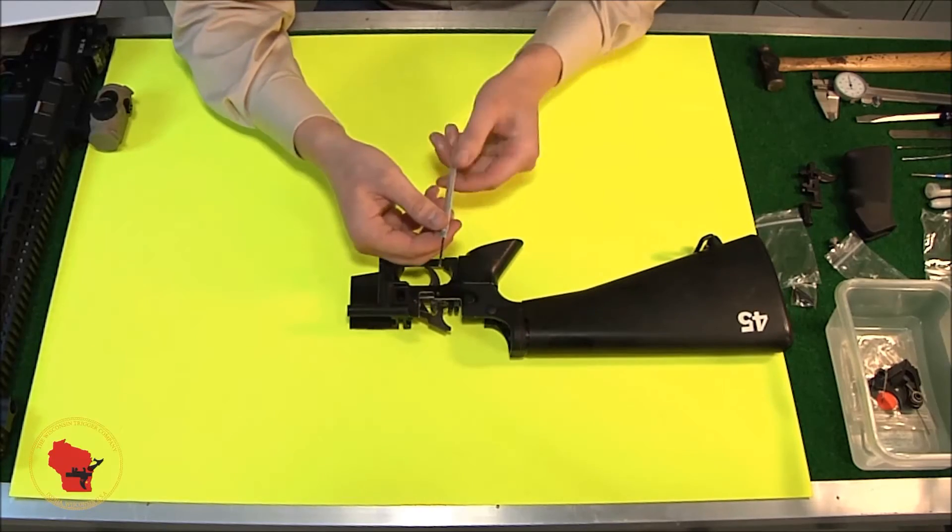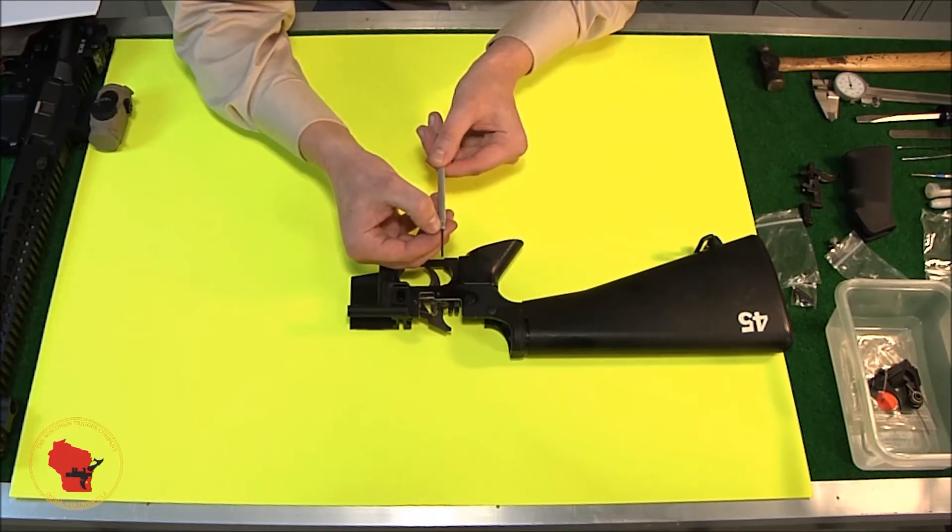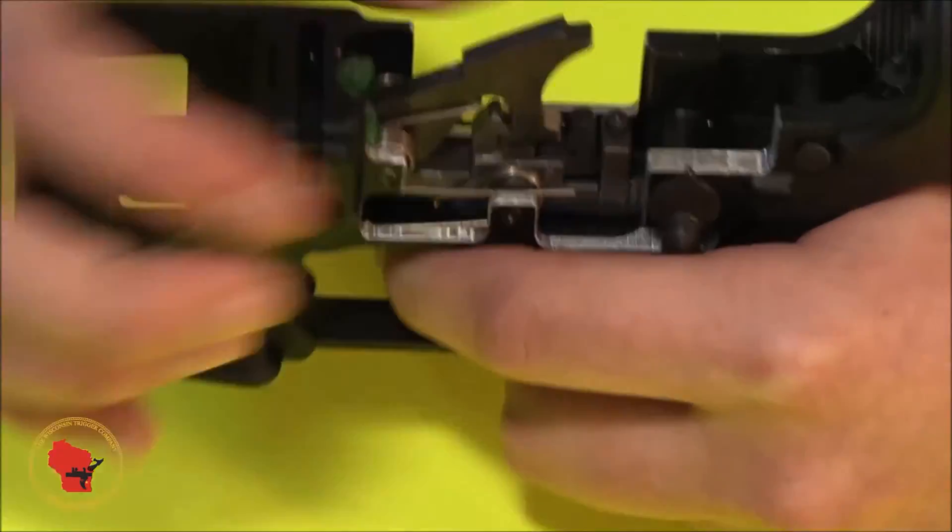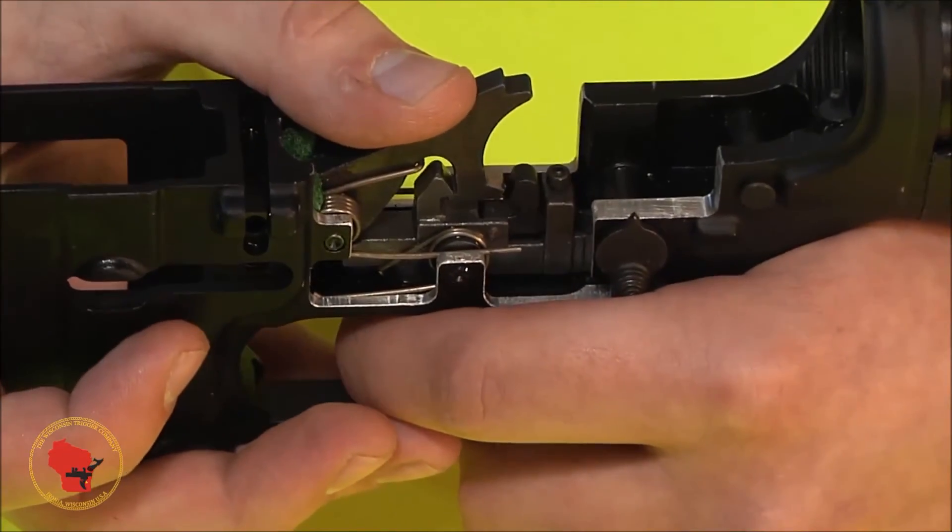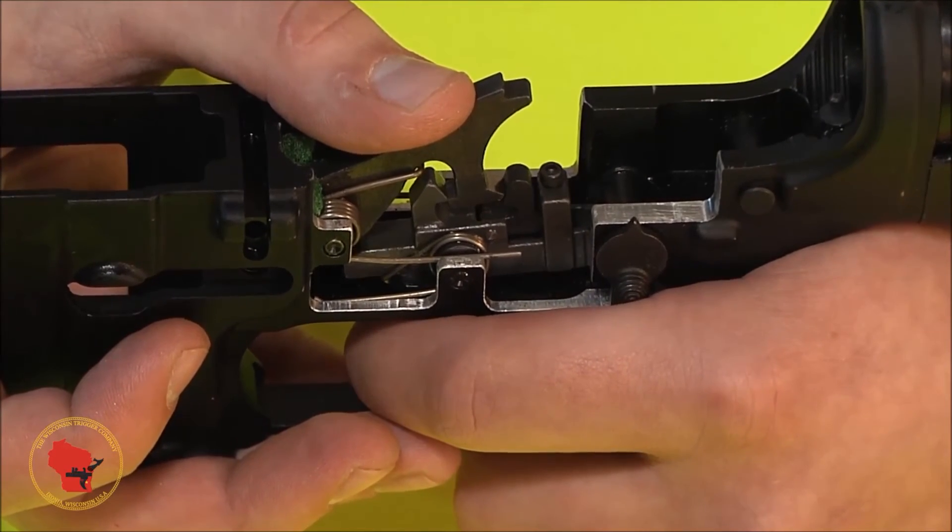And this little handy tool here has the increments already mapped out for me. With this three-eighths of a turn out, you now have your second stage set where we recommend it for the factory.